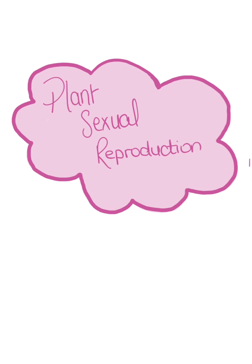Sexual reproduction involves two parents. Each parent typically produces sex cells called gametes. This video will look at the process of gamete formation in plants.